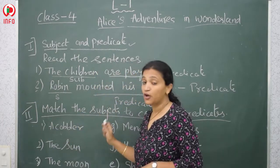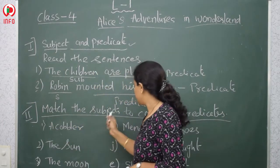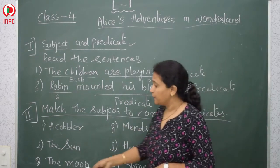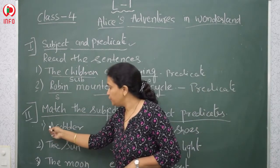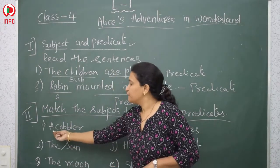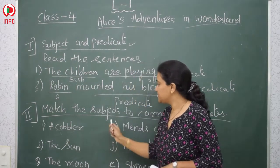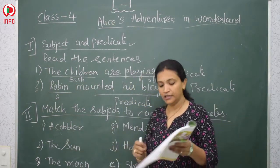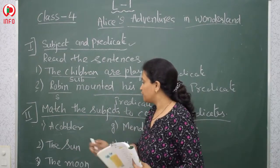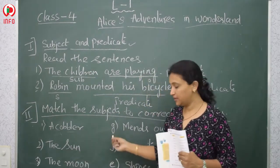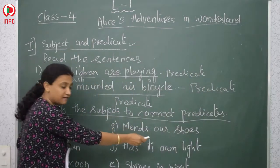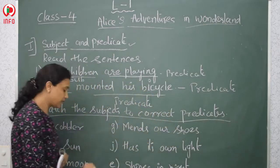That is match the following — match the subjects to the correct predicates. First is 'cobbler.' Do you know who is a cobbler? A cobbler makes our shoes. So the correct answer for cobbler is option G. G is 'cobbler makes our shoes.'